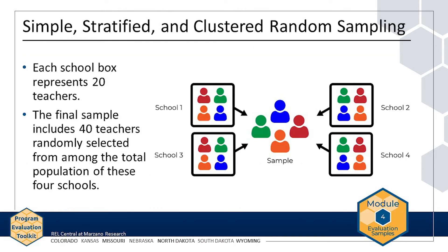To illustrate the different random sampling types, suppose AMP is implemented in four different schools, with 80 teachers total — 20 in each school — and the AMP evaluation team wants to interview a sample of 40 teachers. In simple random sampling, the team would randomly select from a list of all 80 teachers, with each teacher having an equal chance. In stratified random sampling, the team would create a separate list for each school and randomly select exactly 10 teachers from each. In clustered random sampling, the team would randomly select two of the four schools and interview all teachers in those two schools.